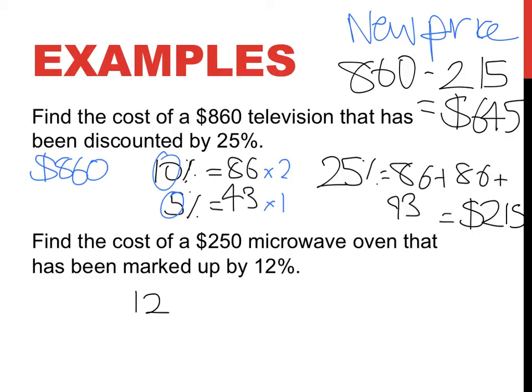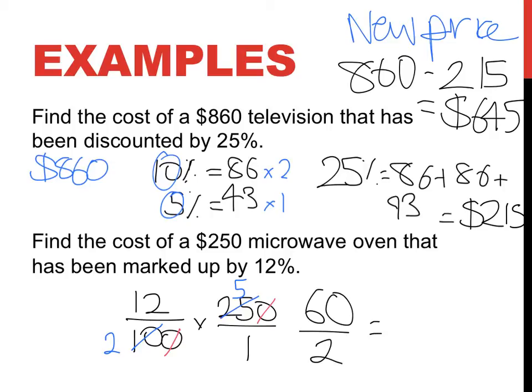So that's 12 over 100 times 250 over 1 and then you can cancel and you can go boom, boom. And then I'm left with 10 and 25. So that goes in twice. That goes in five times. Five goes into 10 twice and into 25 five times. And then you can go one step further and say, 12 times 5 is 60. Two times one is two. So it's going to be $30.